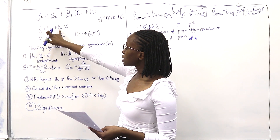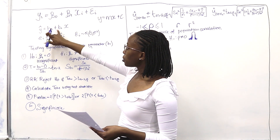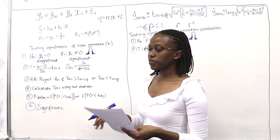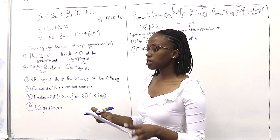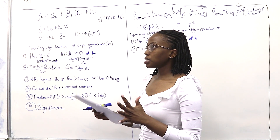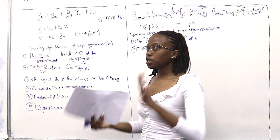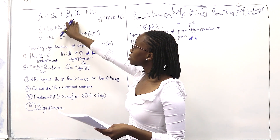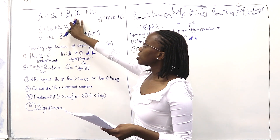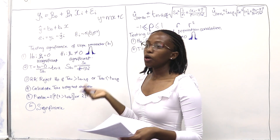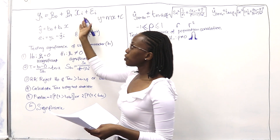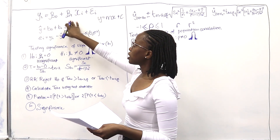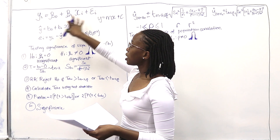Once you've calculated beta 1, you're going to need to test whether it's significant. This means: is there a relationship between y and x? If beta 1 is 0, then x will automatically be 0, which means there won't be a relationship between the two. Beta 1 tells us what the relationship is between x and y.